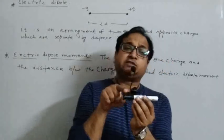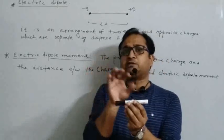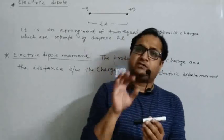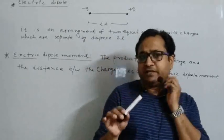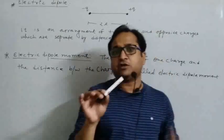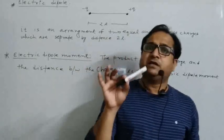Electric dipole means the net charge is zero. Why minus q and plus q? Because the sum of minus q and plus q is always zero. This is a very important thing — the net charge on an electric dipole is always zero.